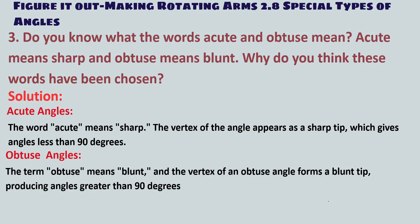Question 3: Do you know what the words acute and obtuse mean? Acute means sharp and obtuse means blunt. The word acute means sharp — the vertex of an acute angle appears as a sharp edge, giving an angle less than 90 degrees. For example, angle BAC where the angle is less than 90 degrees indicates a sharp edge. The term obtuse means blunt — the vertex of an obtuse angle forms a blunt tip, producing an angle greater than 90 degrees, for example angle PQR.